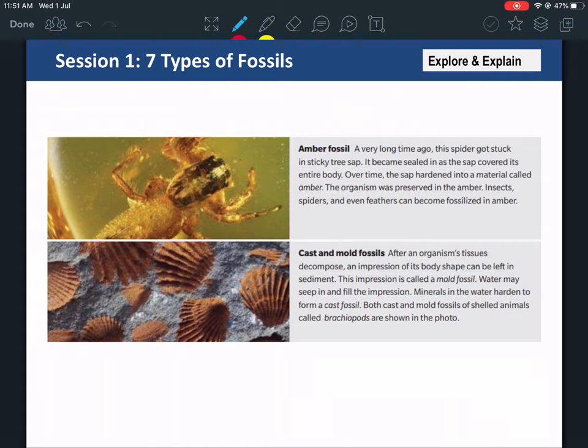And you have the amber fossil. Amber fossil is when a small organism is stuck in tree sap. Tree sap is a liquid - it looks like honey. And then it becomes solid over time.